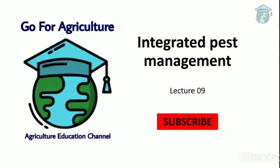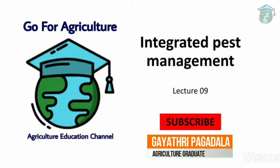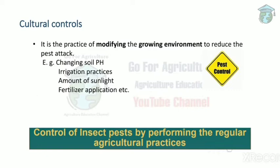Hello everyone, welcome back to our channel Go for Agriculture. In today's lecture 9 of integrated pest management, we'll see cultural control methods of pest management. Cultural control is a practice of modifying the growing environment to reduce pest attack. The growing environment means the factors like soil, sunlight, and crop that influence pest growth and infection.